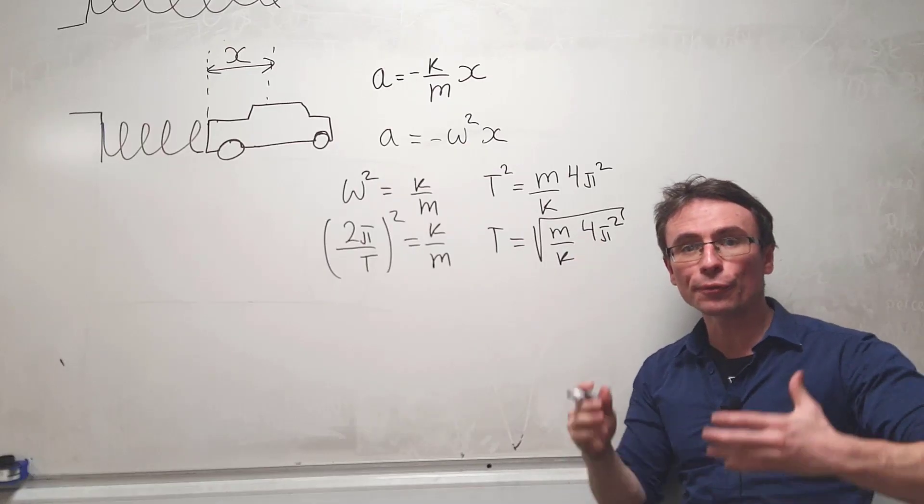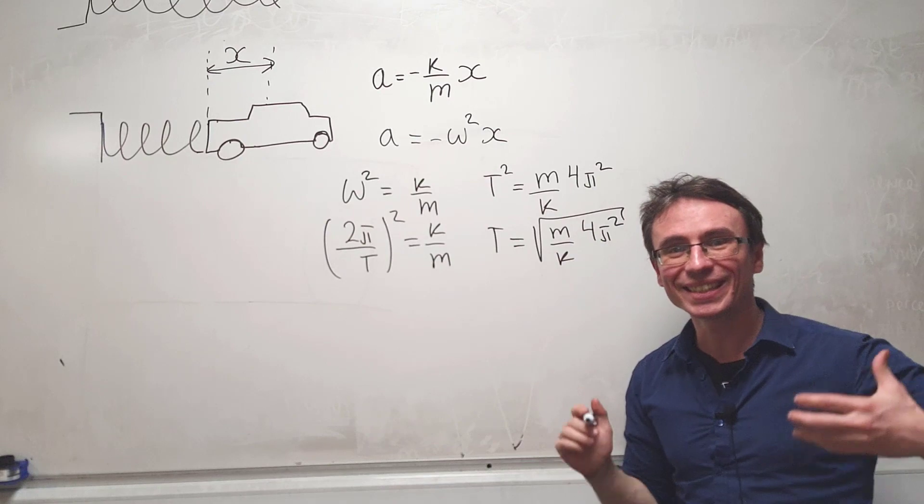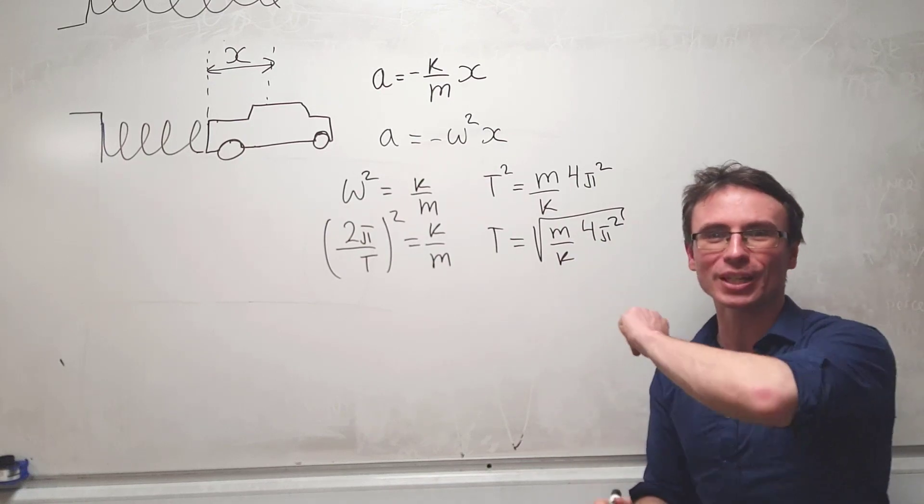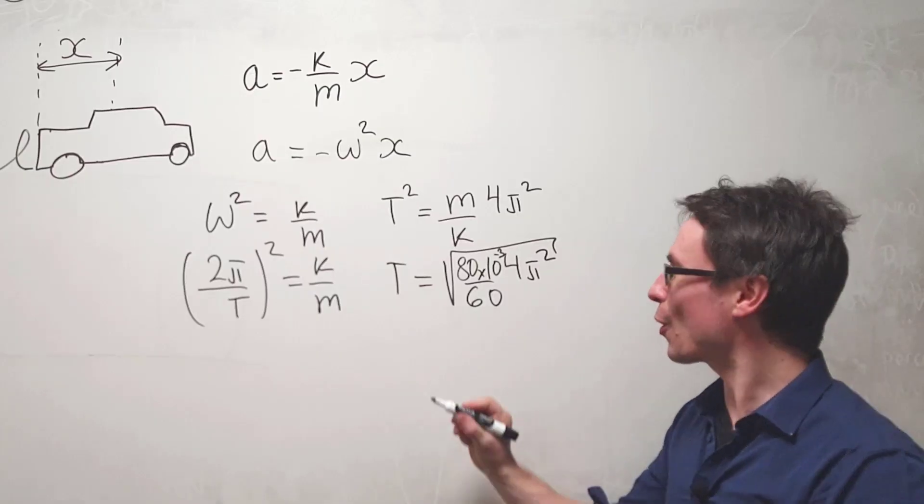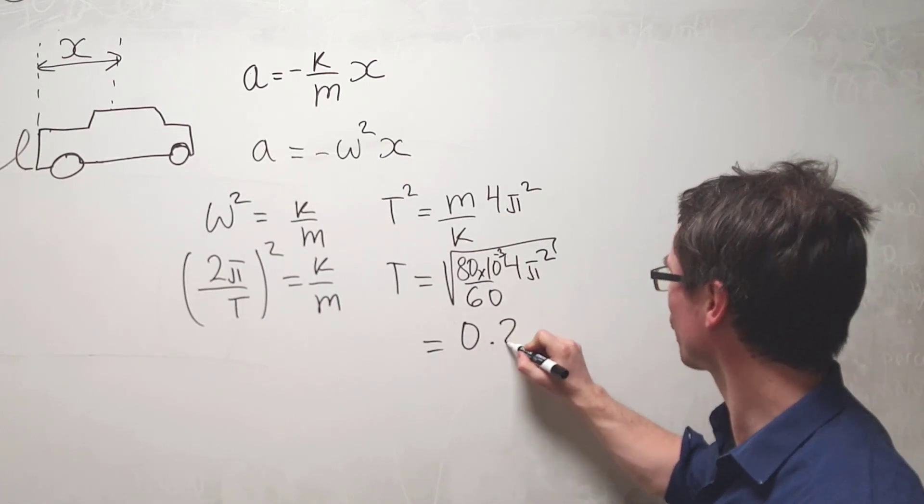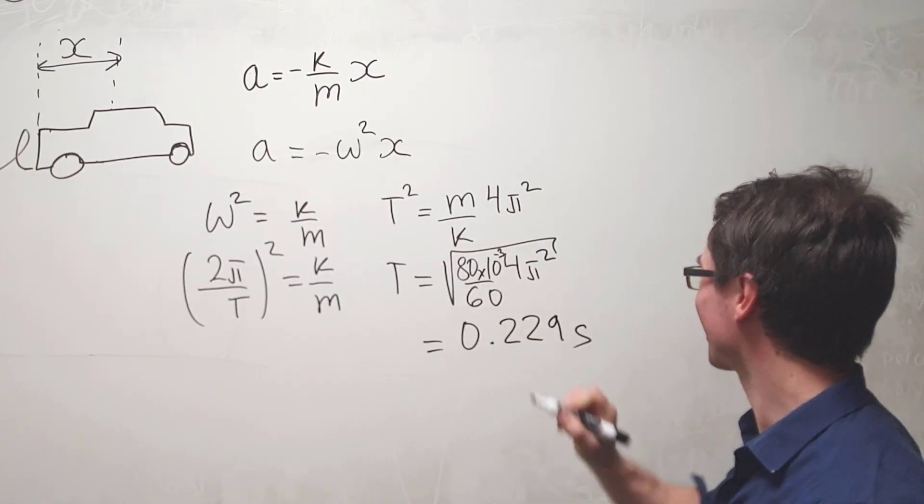We've got values for the mass and the spring constant given in the question. We can plug those in, and if we do so, we're going to get 0.229 seconds.